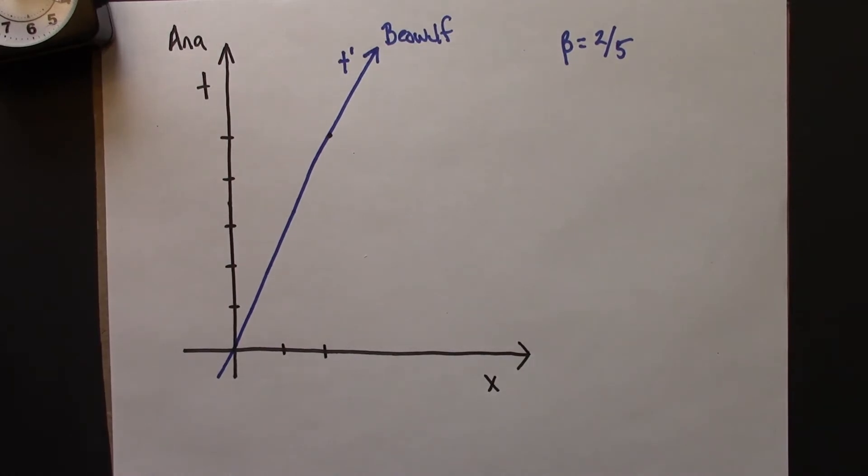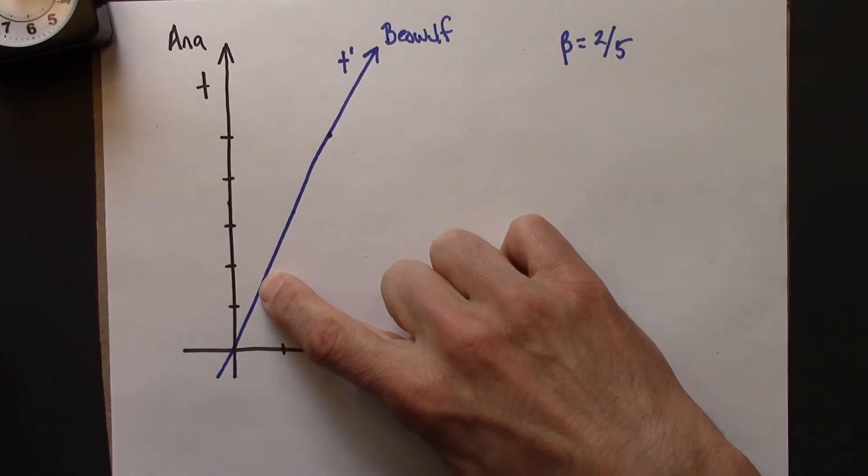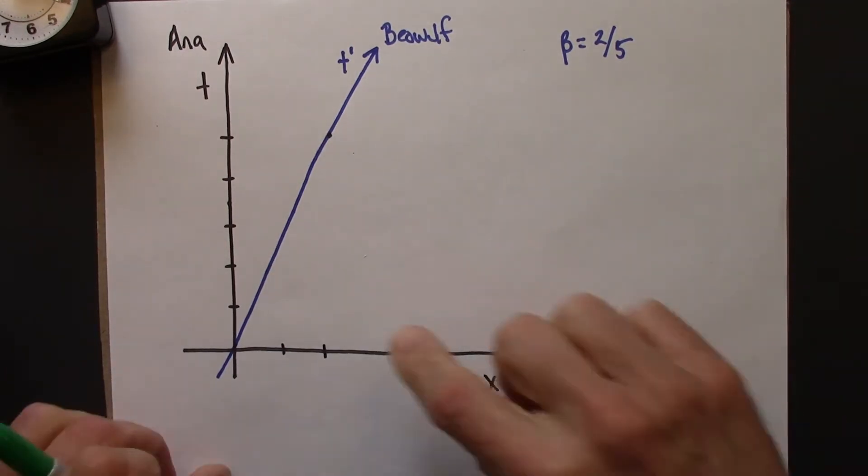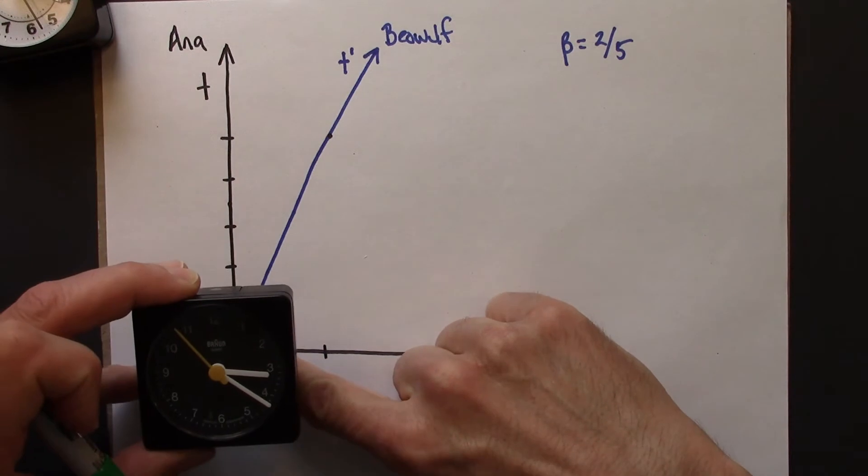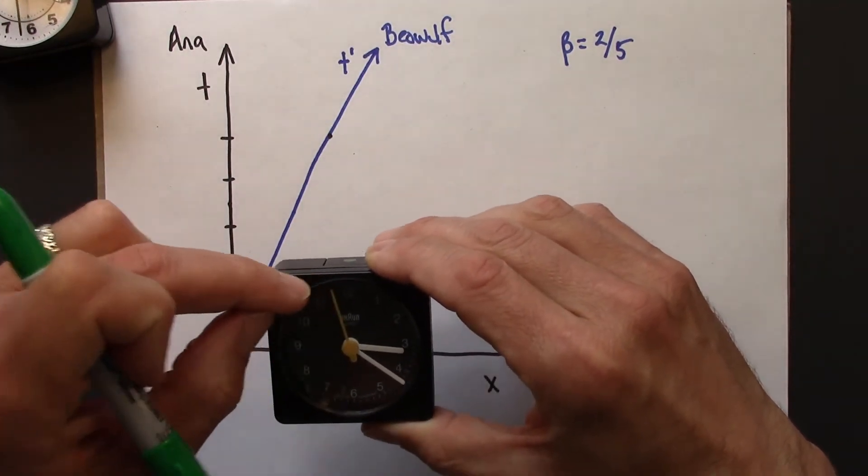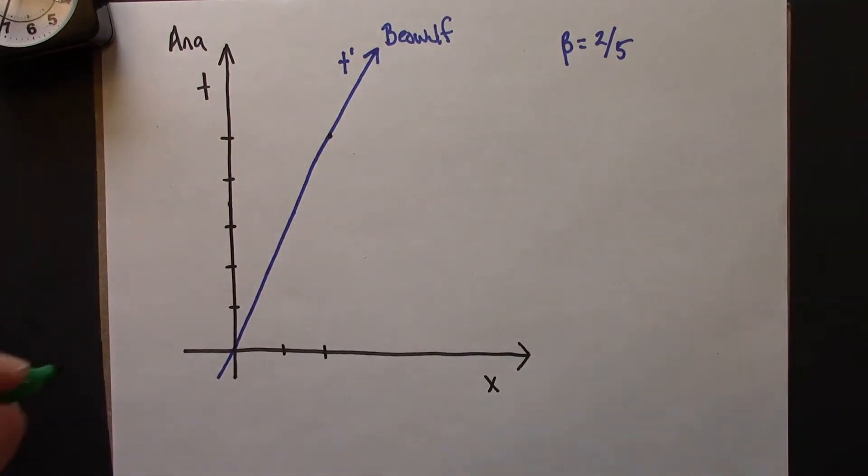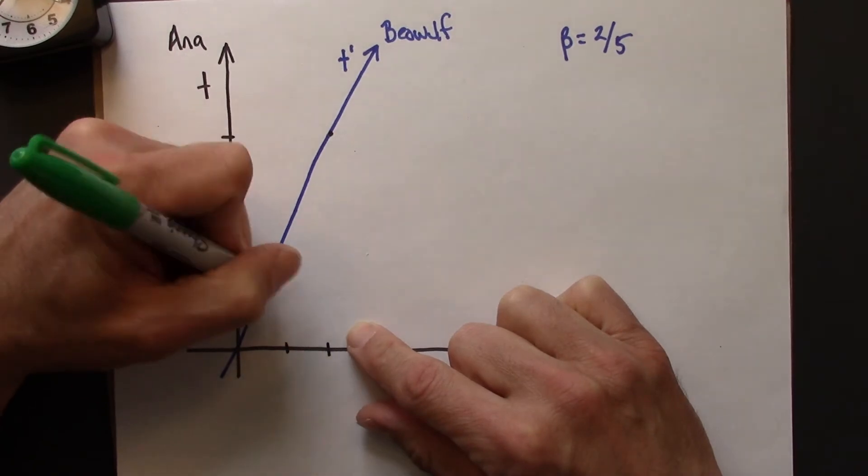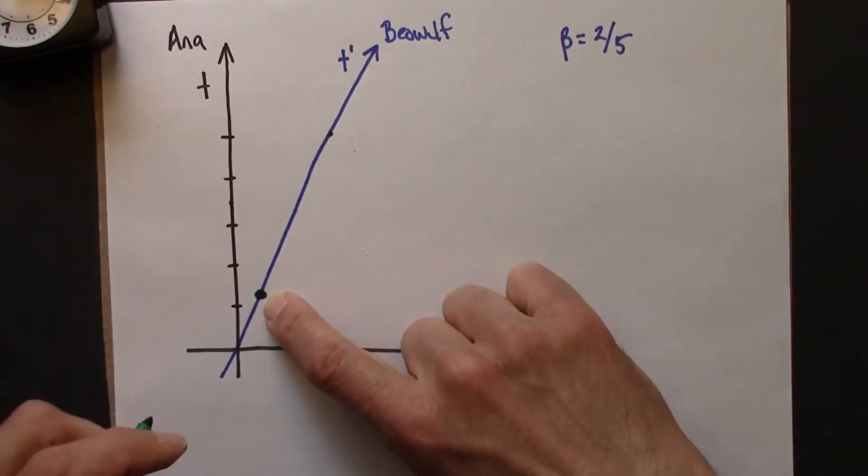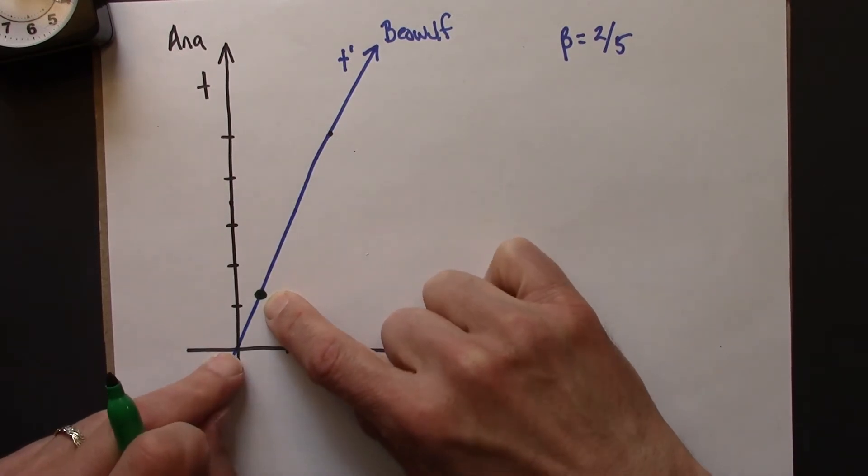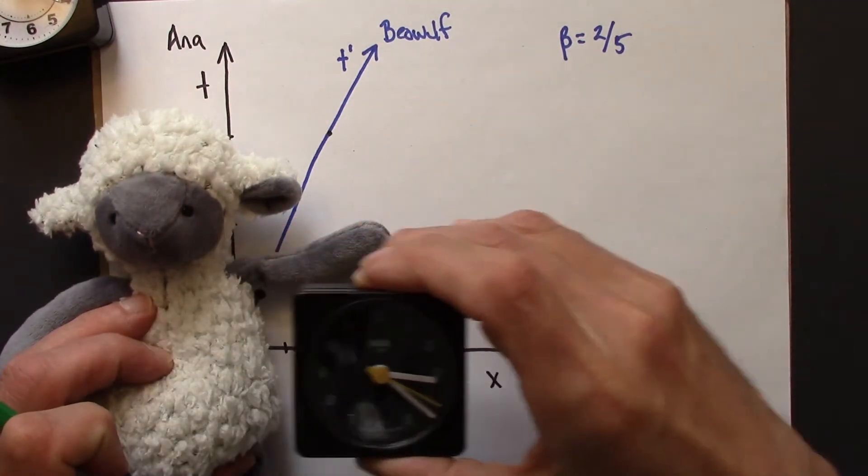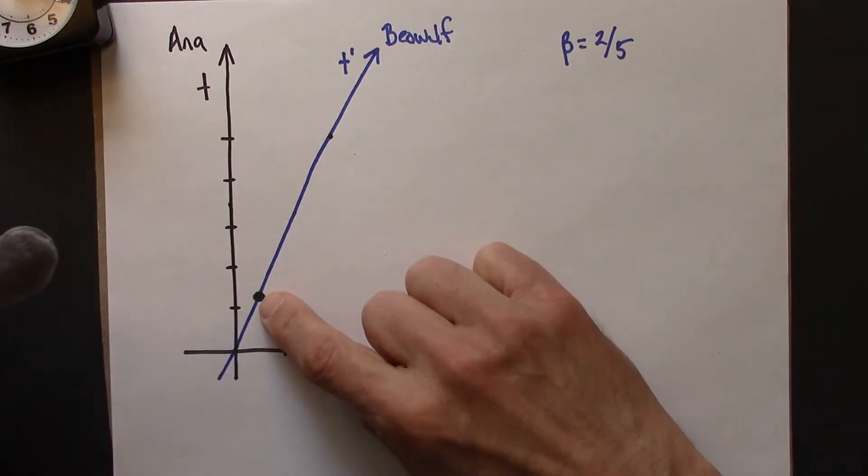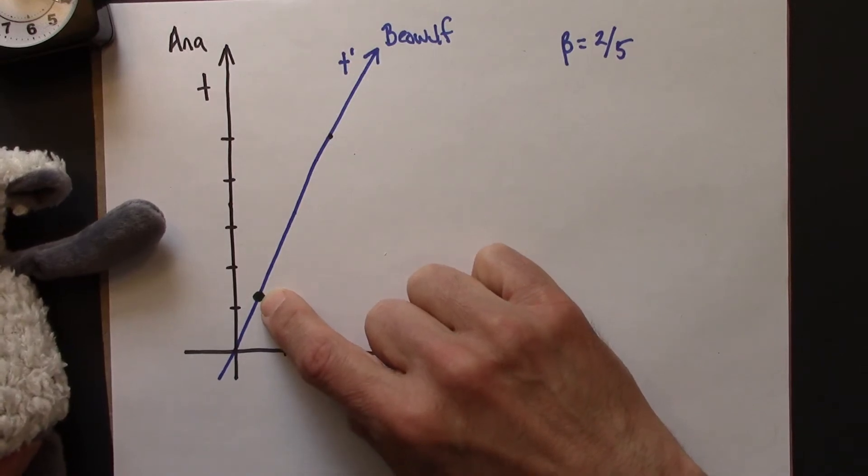So I will do this similar to how we did the example for space. Let's say that Beowulf and his clock, it's 0. His clock is at 0 when he's at the origin and he travels a little bit. And then he notices that his clock ticks one second later. So I'm going to draw that here for reasons I'll explain in a moment. So this is going to be t prime equals 1. So Anastasia is just hanging out and sees this clock go by and it's 0 here and a little while later it's at 1. So the clicking of 1 second, that's the event here on this space-time diagram.